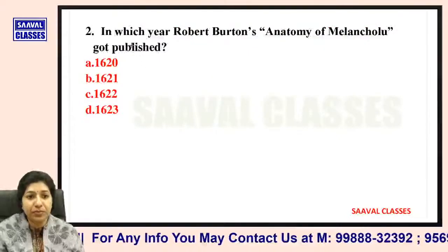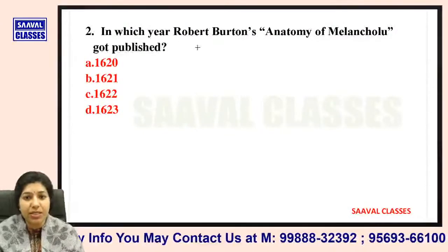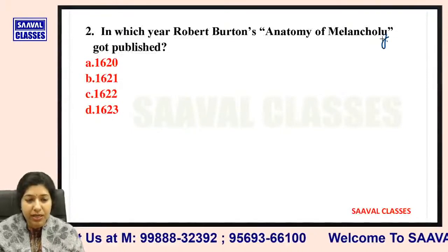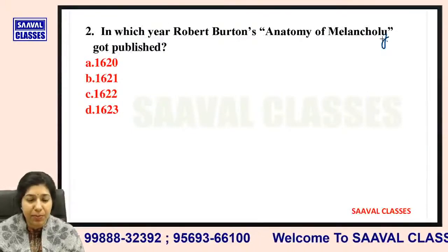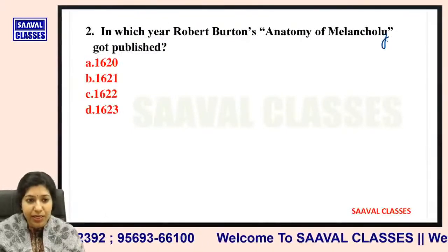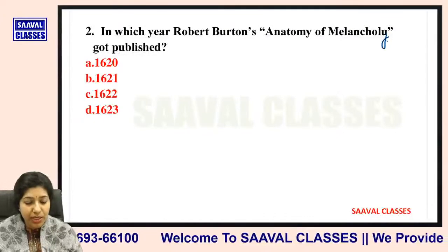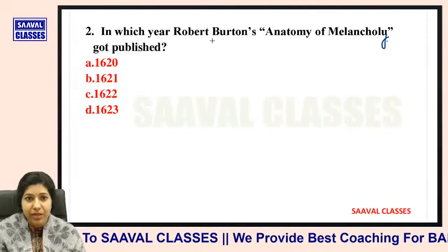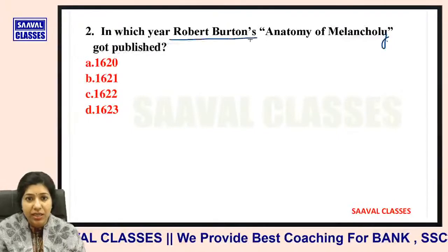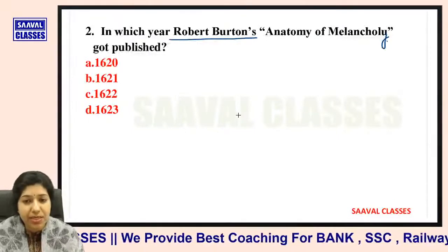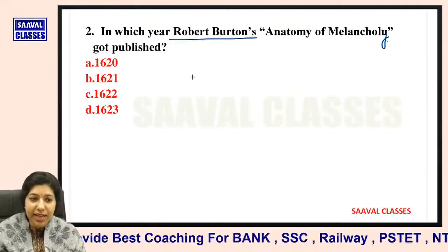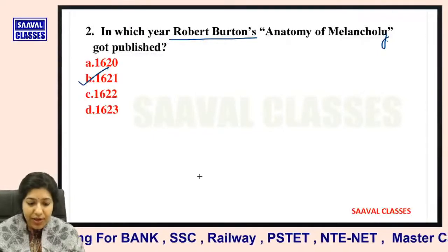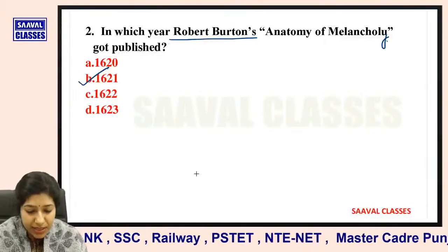Question number two: In which year was Robert Burton's Anatomy of Melancholy published? Was it 1620, 21, 22, or 23? The correct answer is 1621. It got published in 1621.